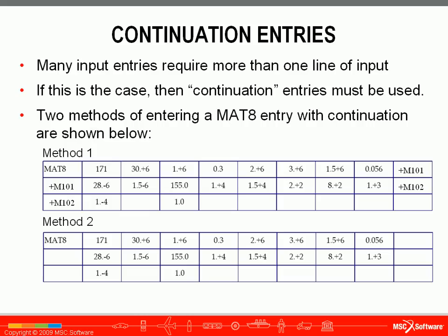Then there are continuation entries, where if there's more data required for an entry than will fit on one line of 80 characters, they continue on the next line. In method 1, in the last field (field 10) on the first line of a MAT8 card, we enter a continuation entry beginning with a plus sign and including some text; that same entry begins the next line, telling NASTRAN the data is a continuation. In method 2, these continuation entries can be left blank, and as long as the lines are in order in the input file, NASTRAN will know they go together.